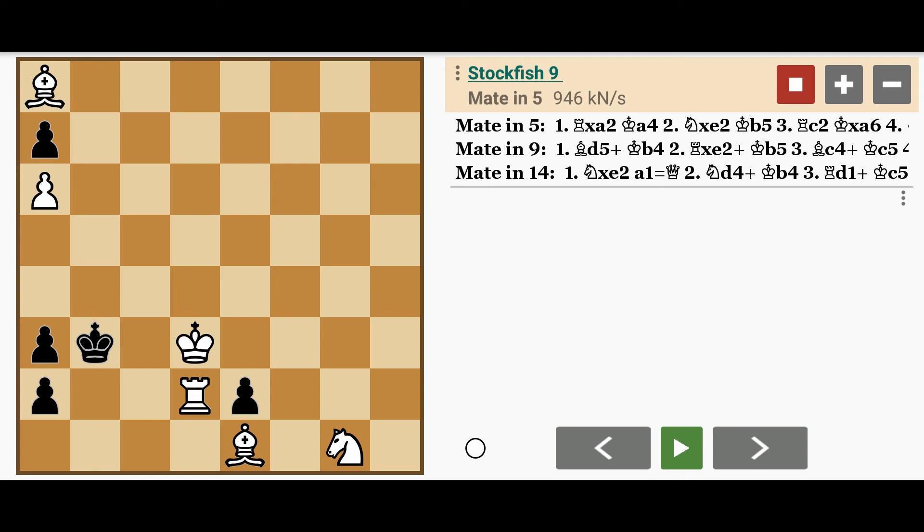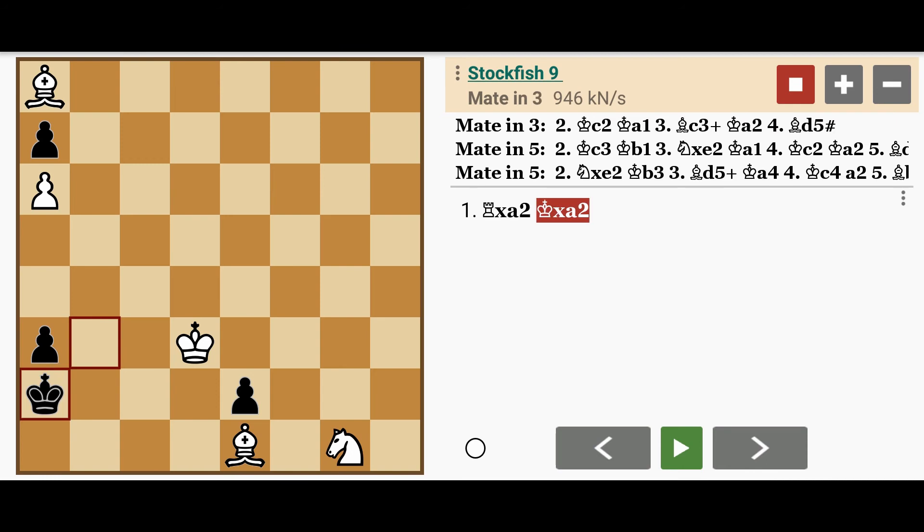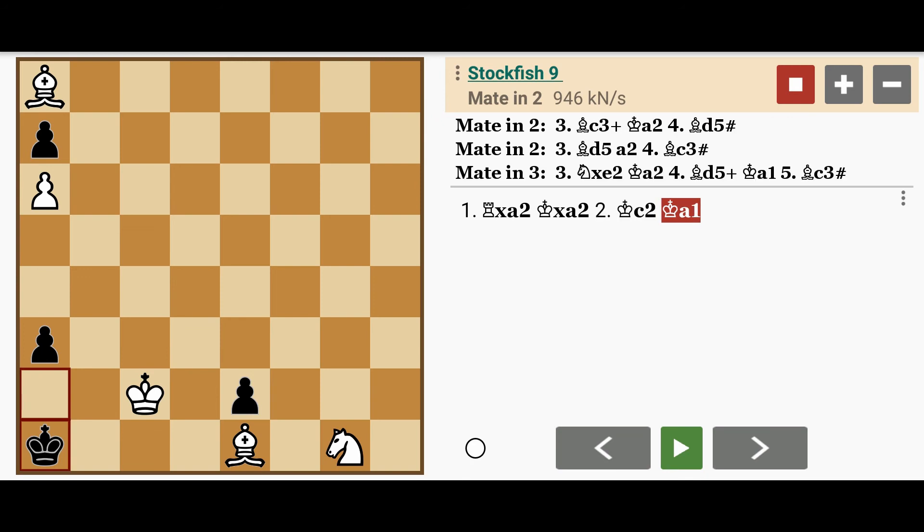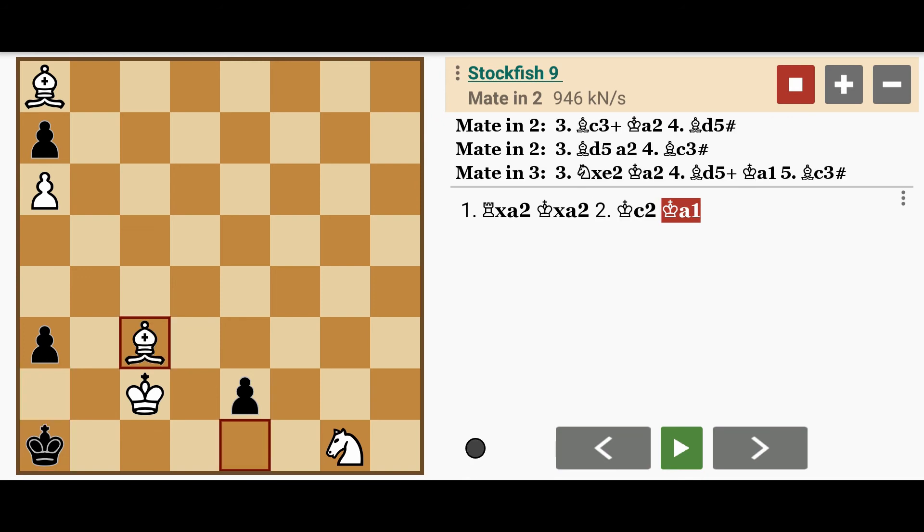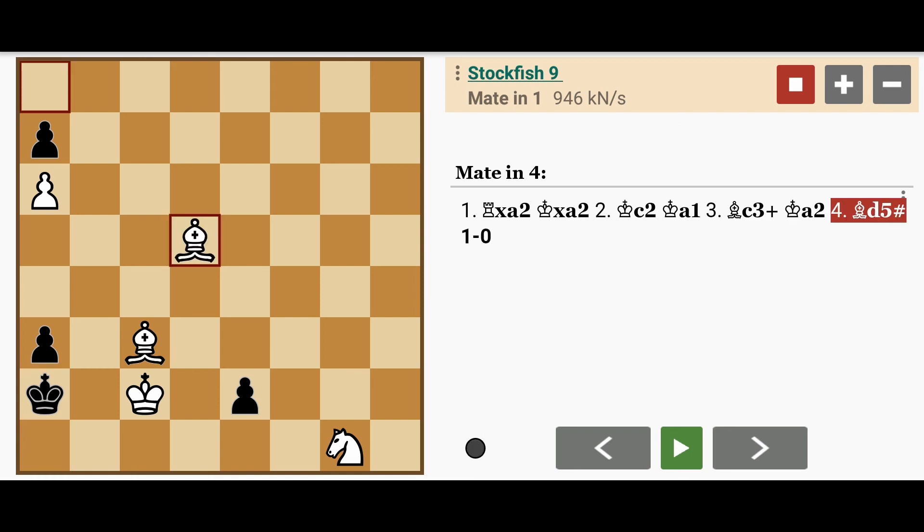The key move here is rook captures a2. White offers the rook. If black were to capture the rook, white wins even more quickly with Kc2, followed by Kc1, the only move, Bc3 check, Kc2, and Bd5 checkmate.